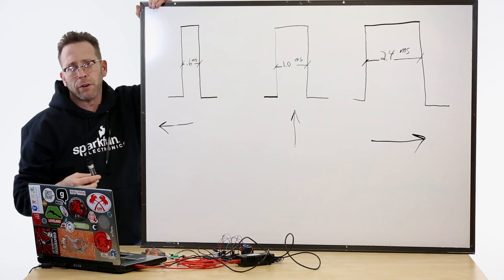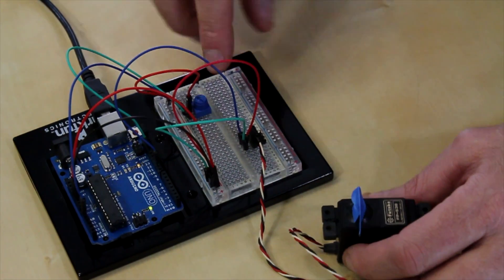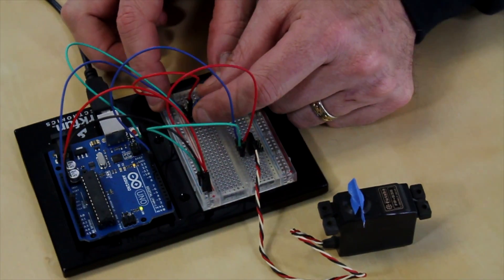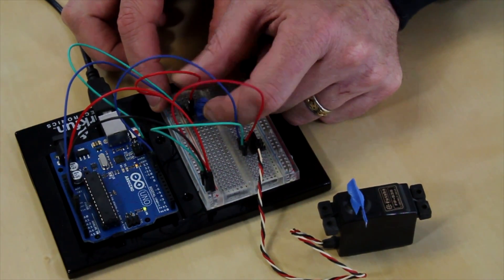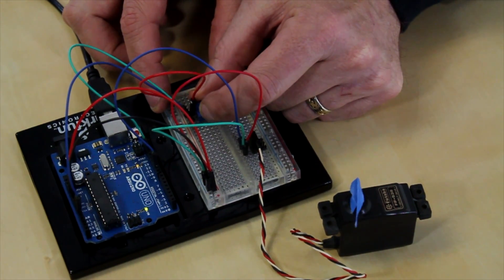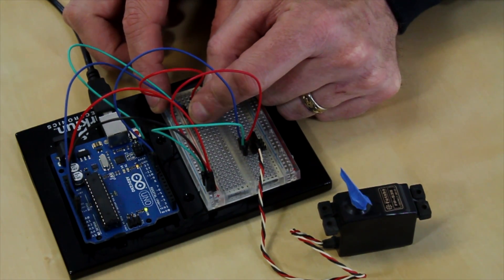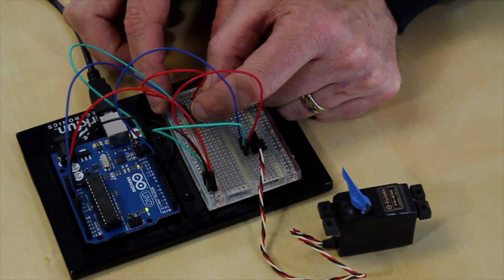I've loaded the knob sketch in the examples from Arduino. And you can watch, as I turn this potentiometer, my shaft rotates in accordance with the reading or what it reads off the potentiometer. So, we now have a way of linking a sensor to absolute position on the servo.